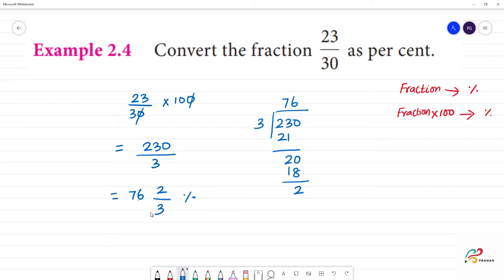So, if it is given in fraction, this is the percentage. Now, if we put decimal, we put 0, then we put 6. 3 is 18, remainder 2. 76.66 is the answer. Otherwise, we can round it off to 76.67 percentage.